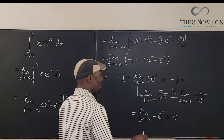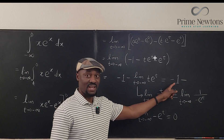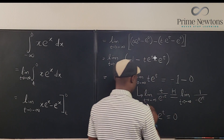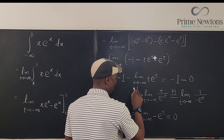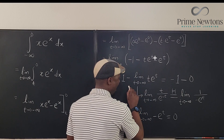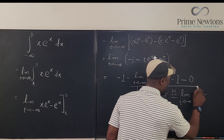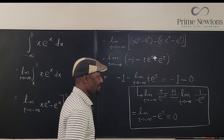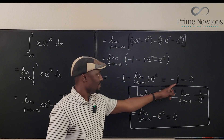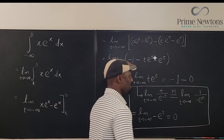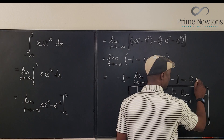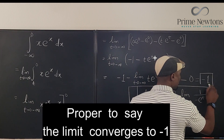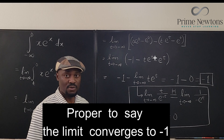So the limit of t·eᵗ as t→-∞ is 0. Therefore our answer is minus 1 minus 0, which gives a final answer of minus 1.